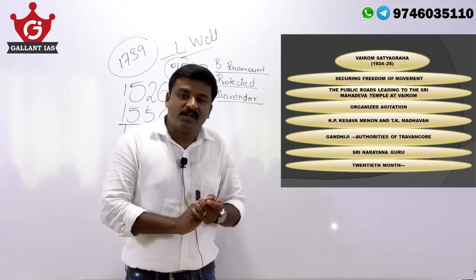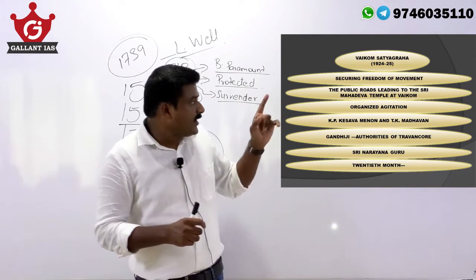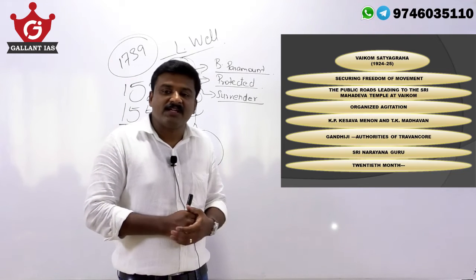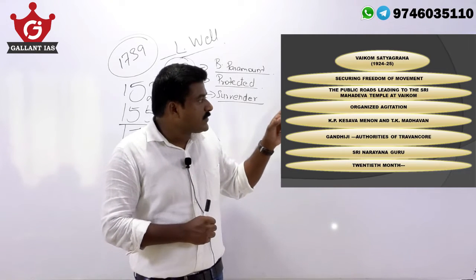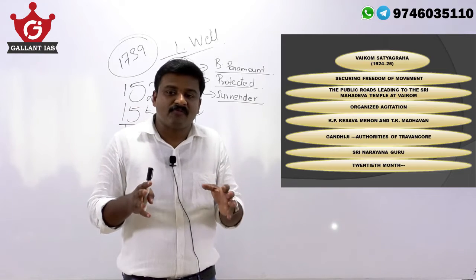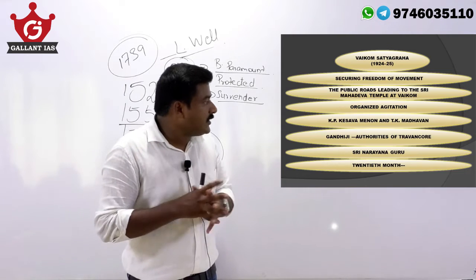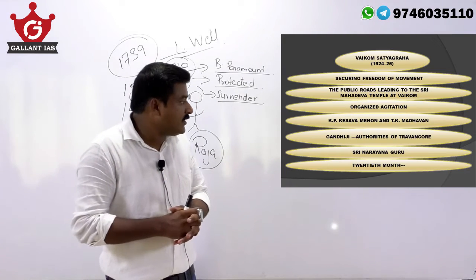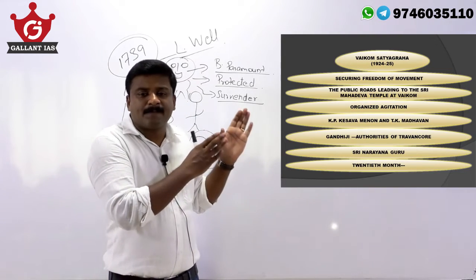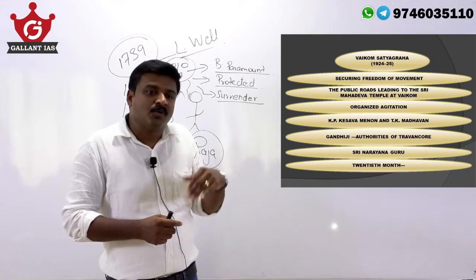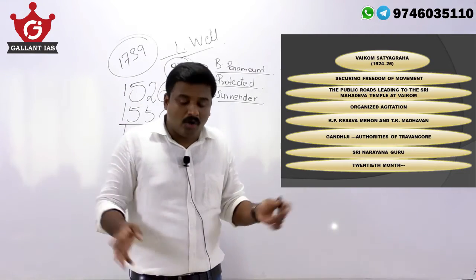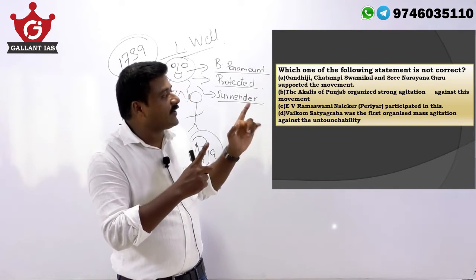Moving on to Module 5 — lower caste movements, civil movements, and tribal movements. An important topic is the Vaikom Satyagraha of 1924–25, the first organized agitation against untouchability in India. It was for securing freedom of movement — public roads leading to Sri Mahadeva Temple at Vaikom were banned for untouchables. Key leaders included KP Kesava Menon and TK Madhavan. Gandhiji, Chattambi Swami, and Sri Narayana Guru also supported the movement. EV Ramaswami Nayakar from Tamil Nadu participated and got arrested. Finally, the temple roads were opened for all.